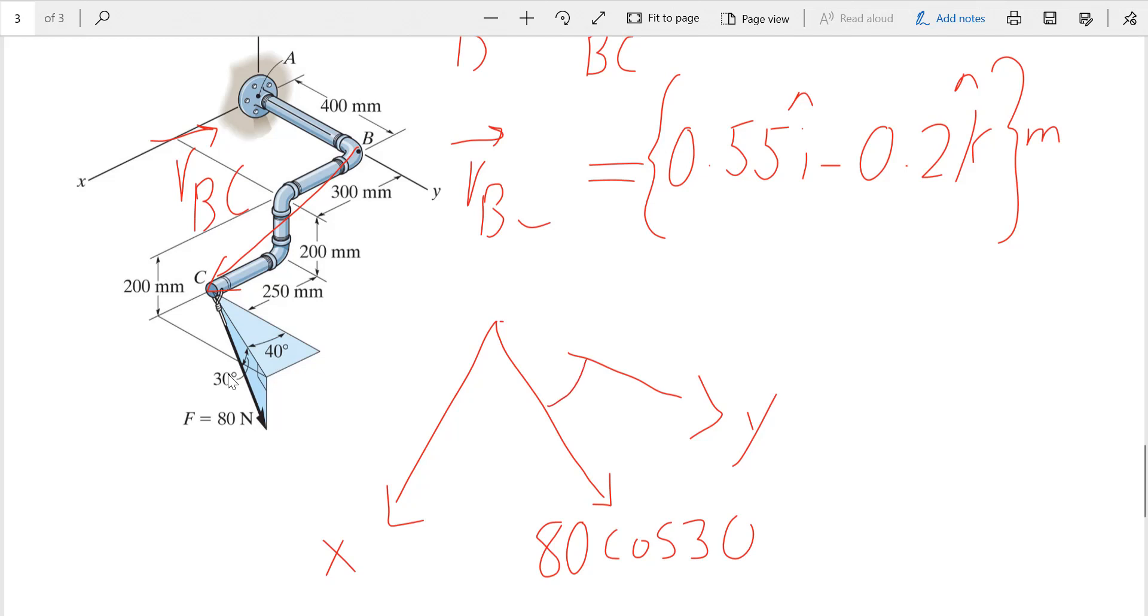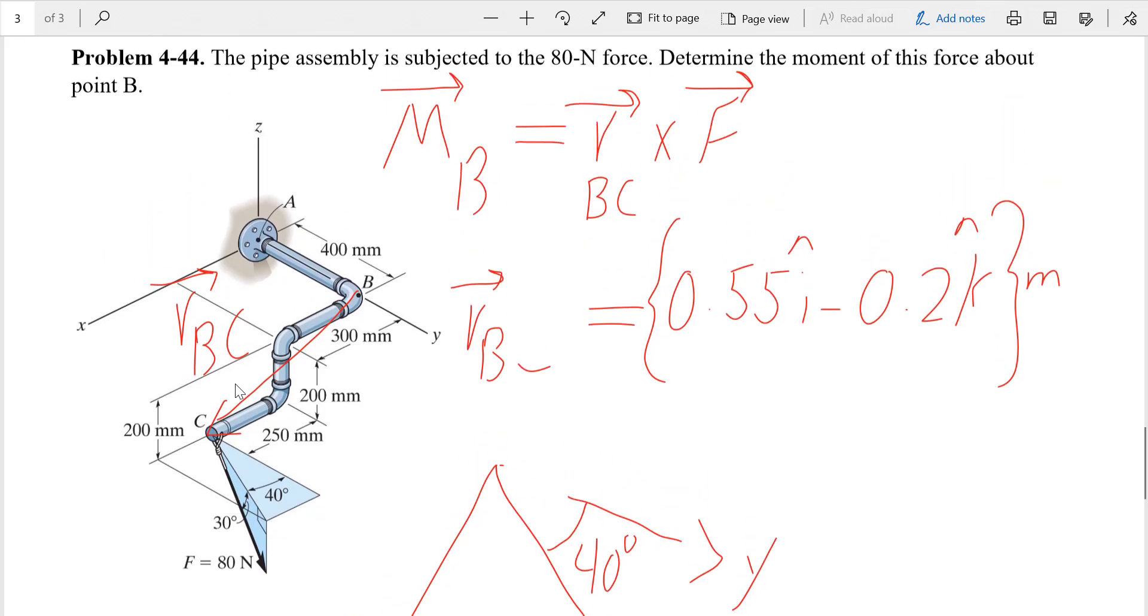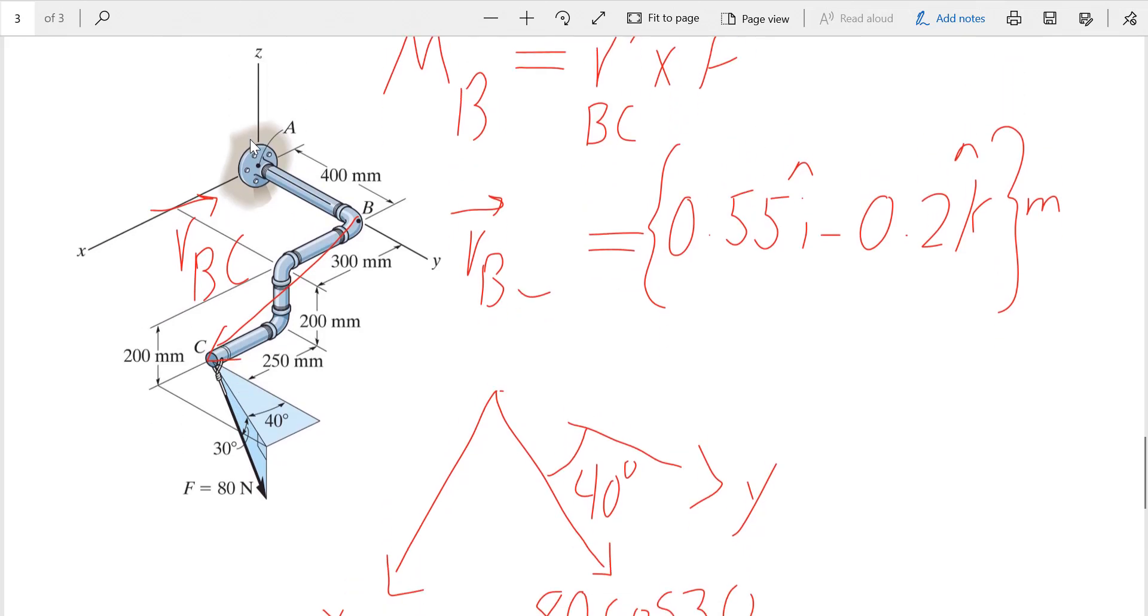Now I have the angle here 40 degrees. The Y component would be 80 cosine 30 cosine 40 towards positive Y. The X component would be 80 cosine 30 sine 40. The Z component - we have this angle with the plane - so 80 sine 30 towards negative Z, opposite of the axis, would give us the Z component.